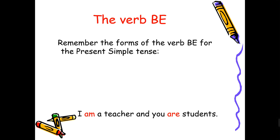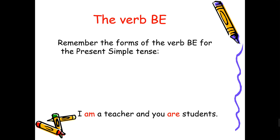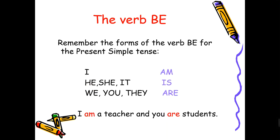How do we use it with verb to be? Remember the forms of verb 'be' for the present simple tense. The verb 'to be' forms are am, is, and are. We use 'am' with I, 'is' with he, she, and it, and 'are' with you, we, and they. For example: 'I am a teacher and you are students.'